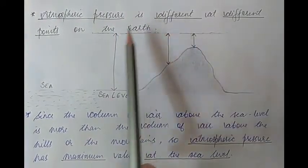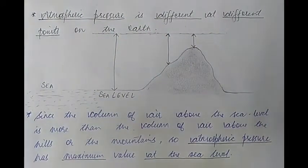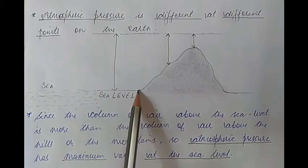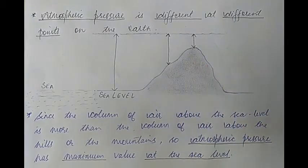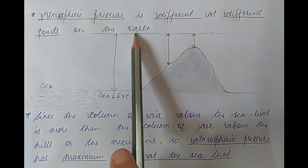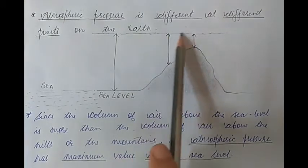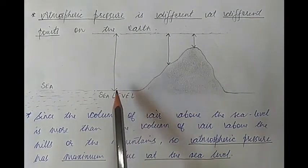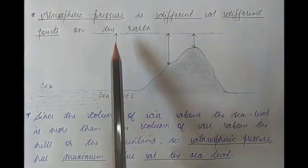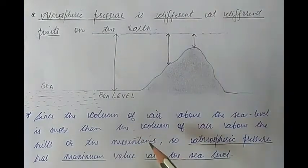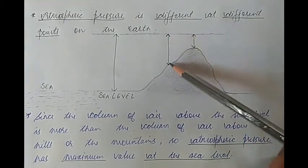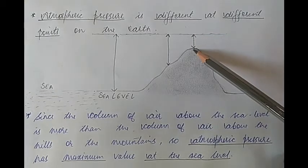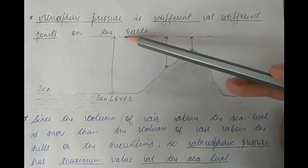To explain this, consider a picture with sea level at the bottom, going up towards hills and mountains. The uppermost layer of the atmosphere represents the top boundary. At sea level, the column of air has the maximum height, whereas as you go up the hills, the column of air decreases, and at the mountain top the column of air is the least.